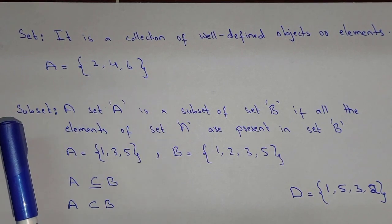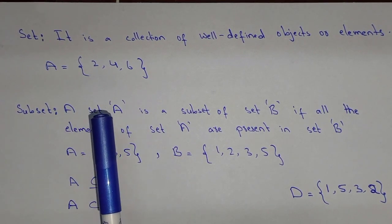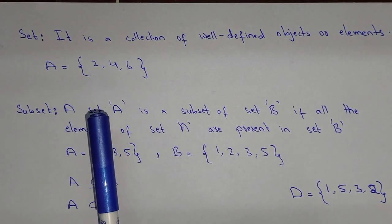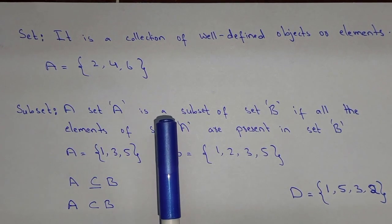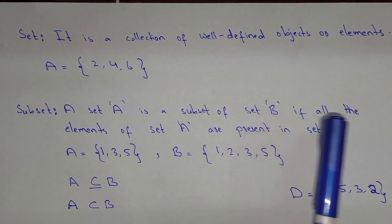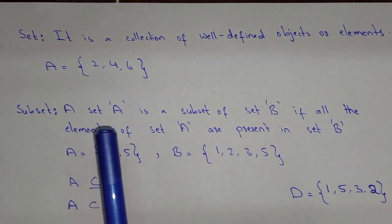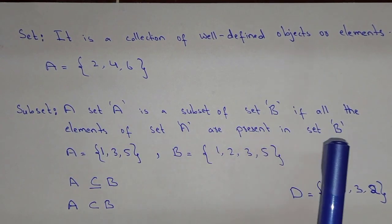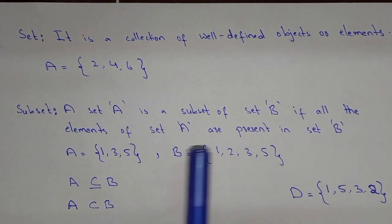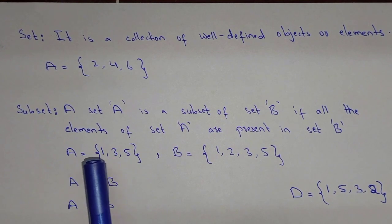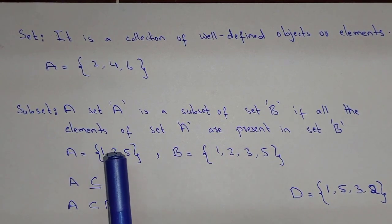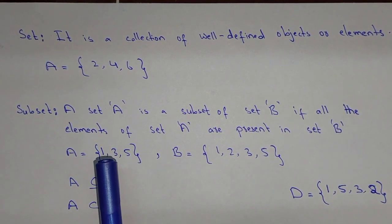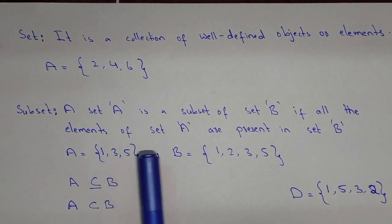Now, what is a subset? For example, we have two sets A and B. A set A is a subset of set B if all the elements of set A are present in set B. So let's suppose this is set A and this is set B. In set A, we have the elements 1, 3, and 5.